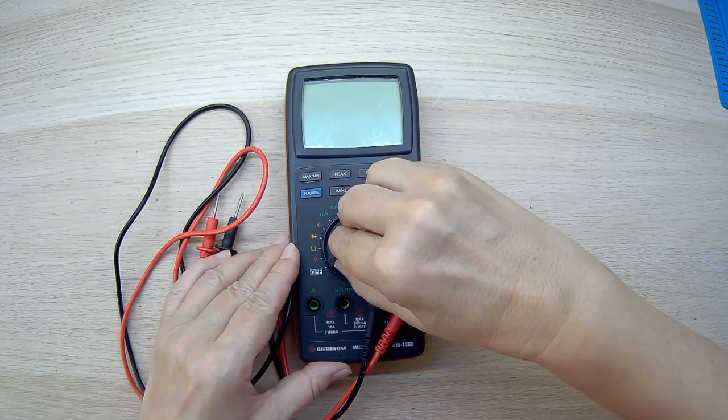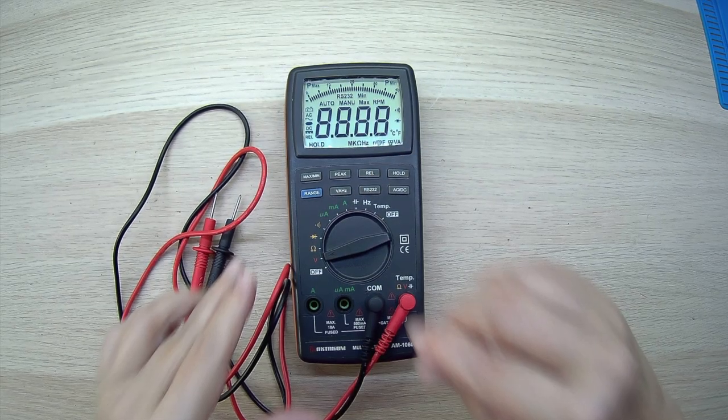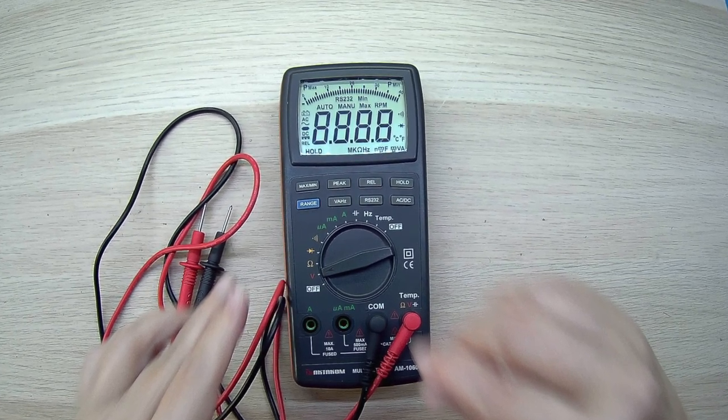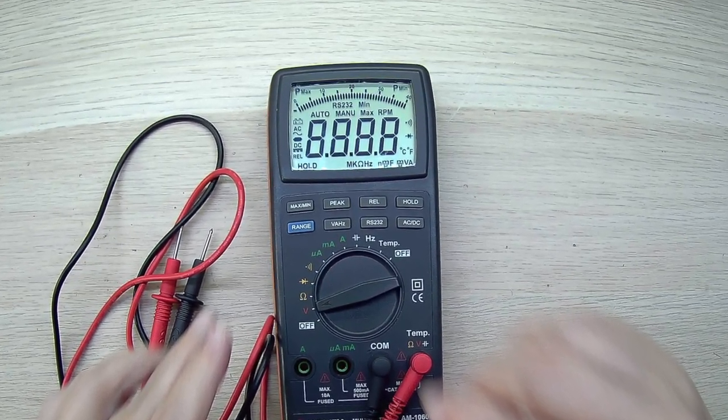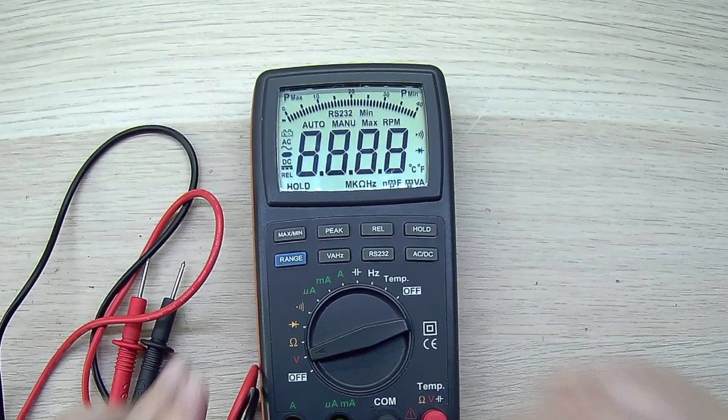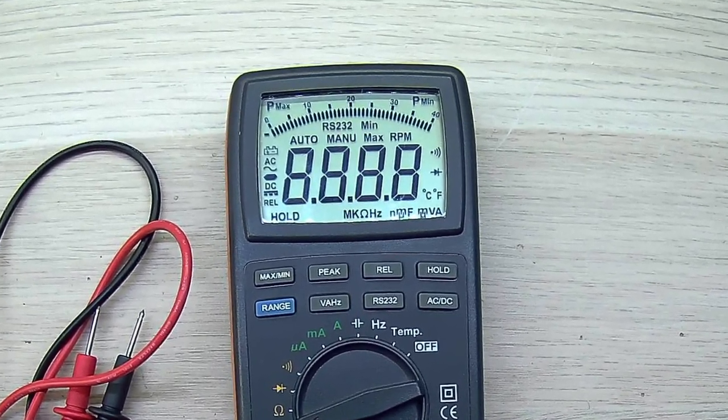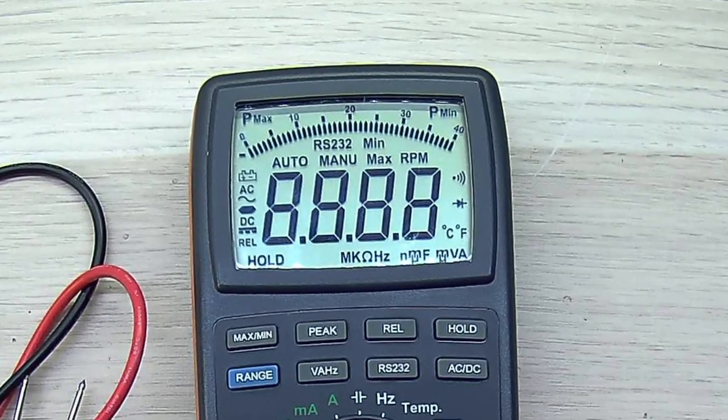Immediately after turning it on we see a very large display full of different icons. There are mode symbols here – automatic and manual range selection, maximum, minimum and peak values, relative measurements and much more.